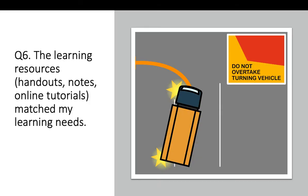Number six: the learning resources — such as handouts, notes, and online tutorials — matched my learning needs. Here's a diagram of a heavy vehicle going around a left corner, with the 'do not overtake turning vehicle' sign. Visual handouts like this can be really helpful because it puts a plan view up top and the learner can see it. As the trainer talks, those visual cues start to sink in about how to manage that type of situation. This handout could be useful for the heavy vehicle driver, but also for the car driver to know not to move up on the inside on the left, for example.